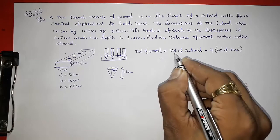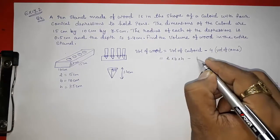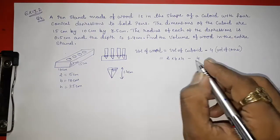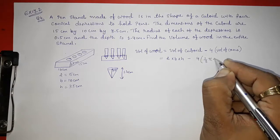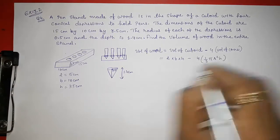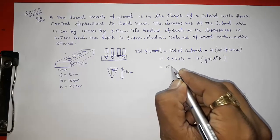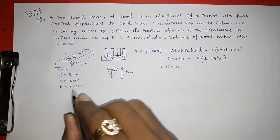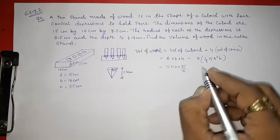So volume of cuboid will be equal to length into breadth into height minus 4. Volume of cone will be equal to 1 by 3 pi r square h. Now, put up the values. Length is 15 into 10 into 3.5, so 35 by 10 you can write down.